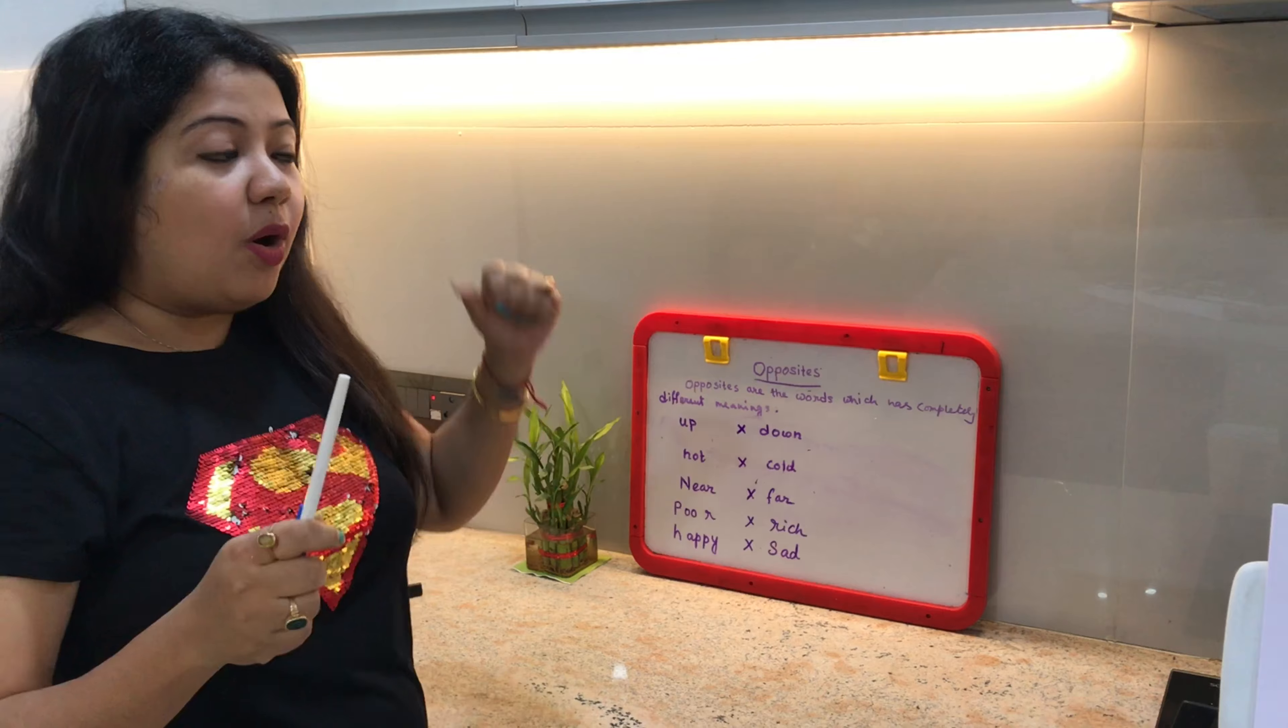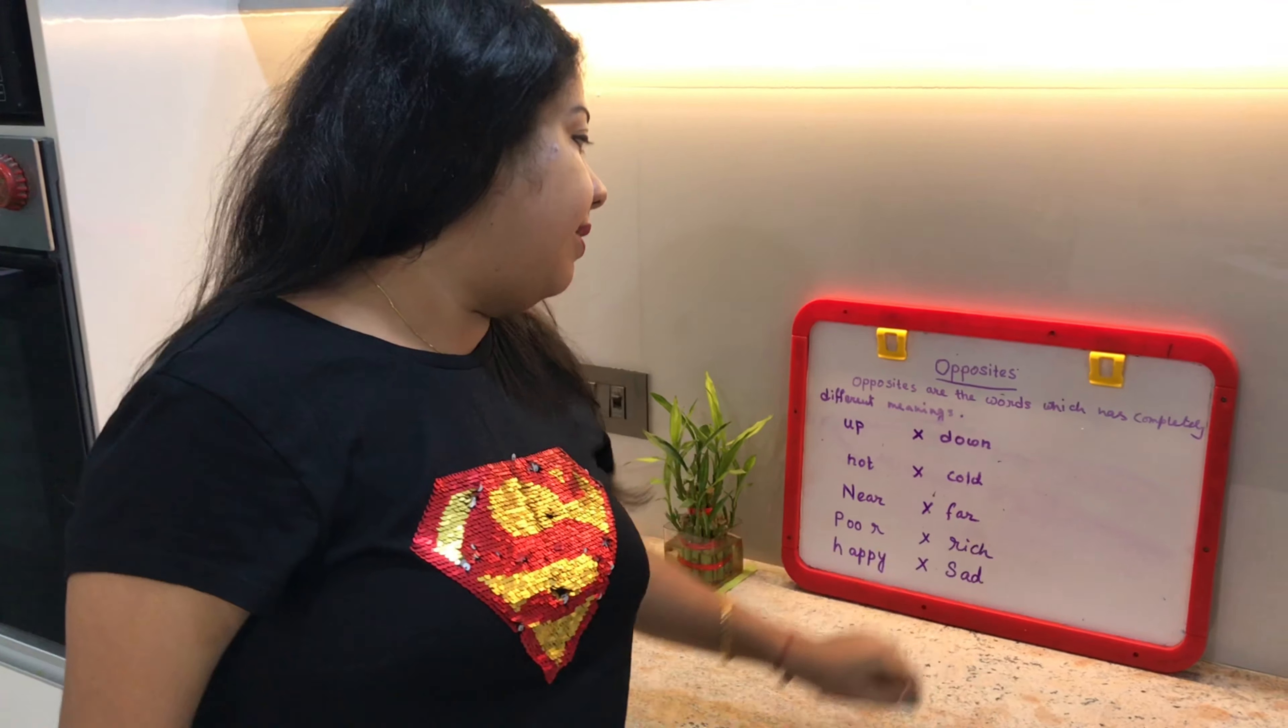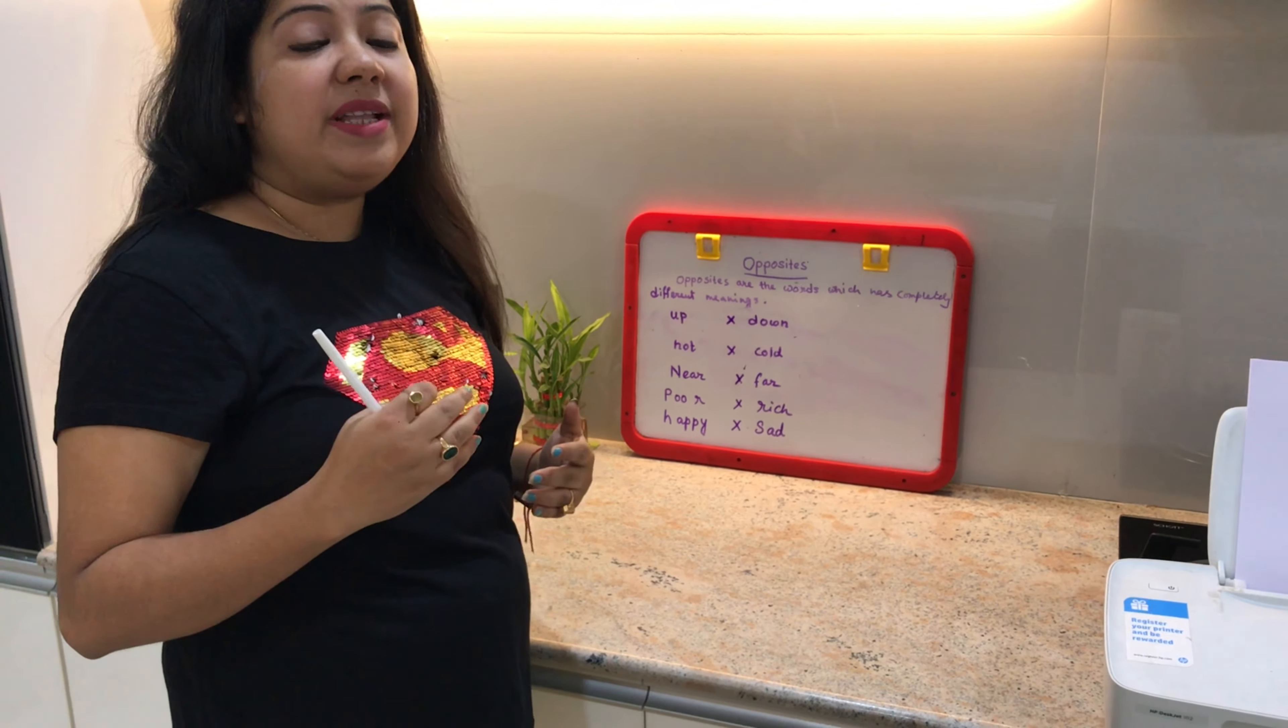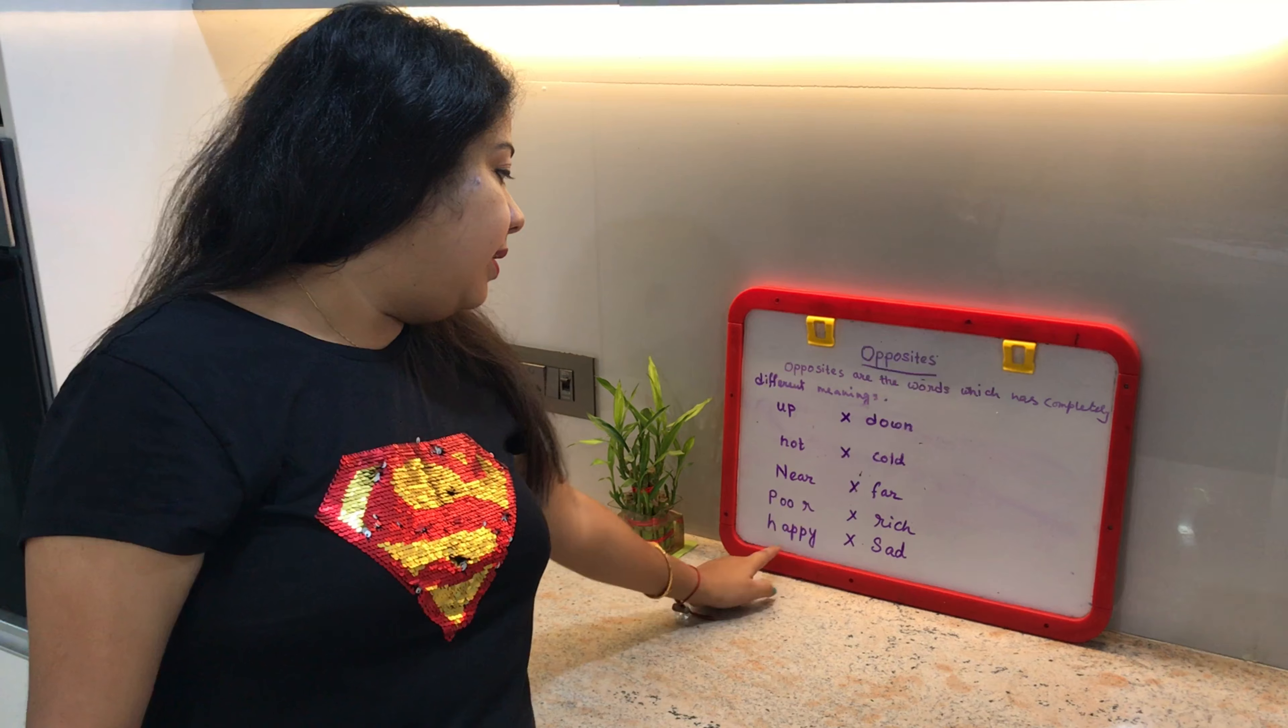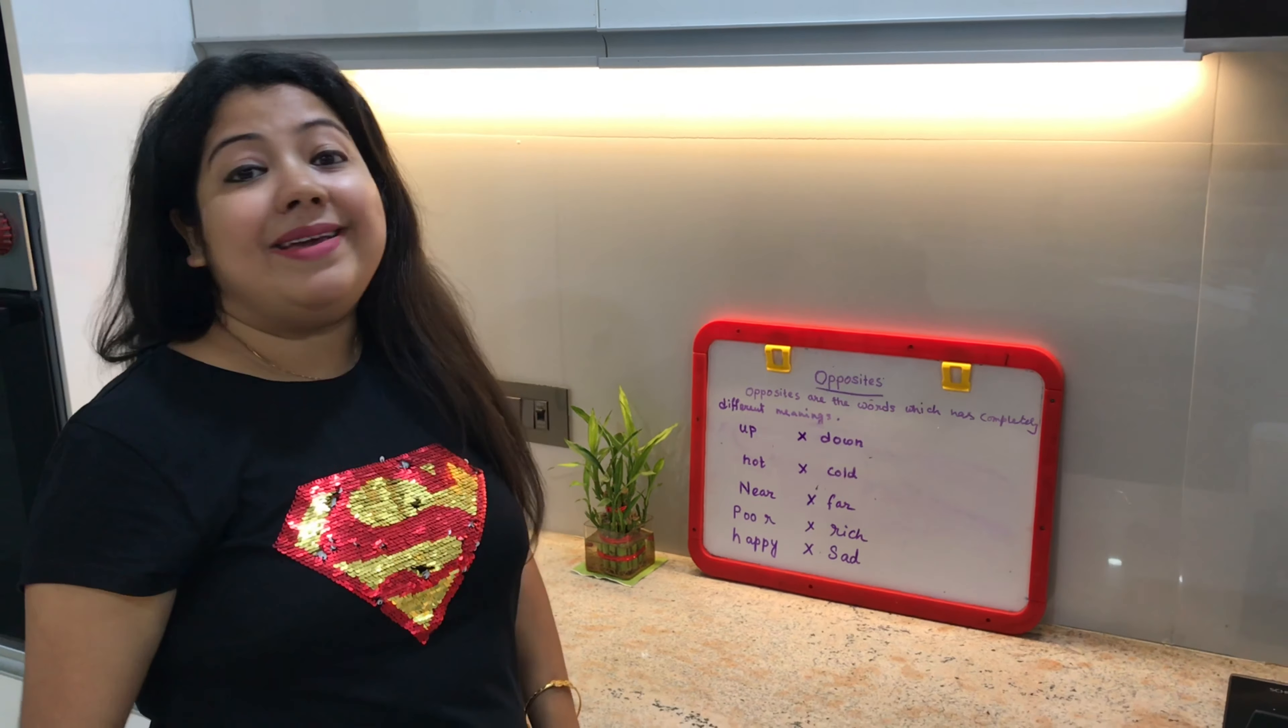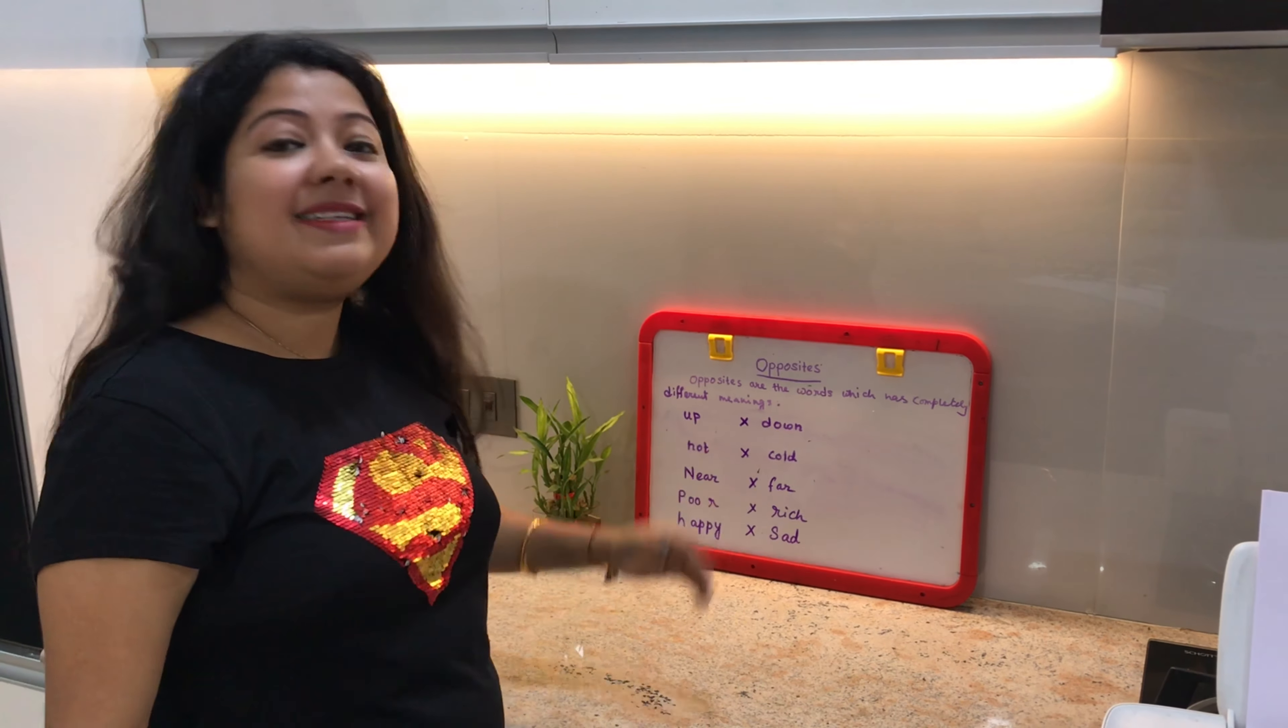Next is poor and rich. Next is happy and sad. Happy is when you smile, sad is when you cry. So be happy and study this at home.